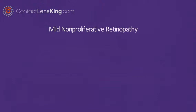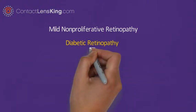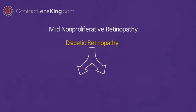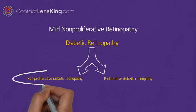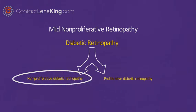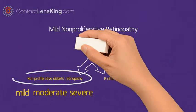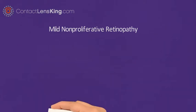What is Mild Non-Proliferative Retinopathy? Diabetic Retinopathy is classified into two types: Non-Proliferative Diabetic Retinopathy and Proliferative Diabetic Retinopathy. The former can further be broken down into three stages: Mild, Moderate, and Severe. In this video, we will focus on mild non-proliferative retinopathy.